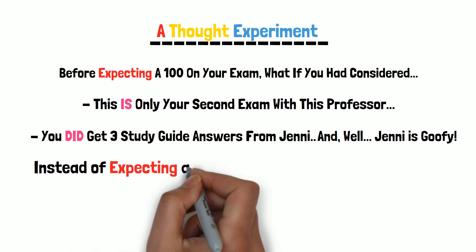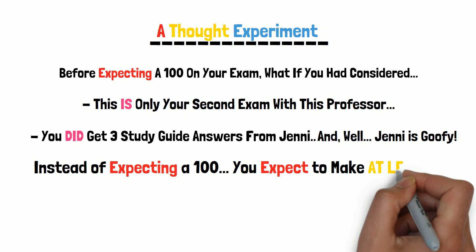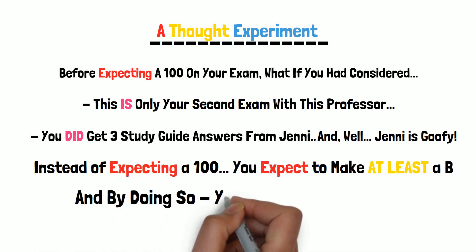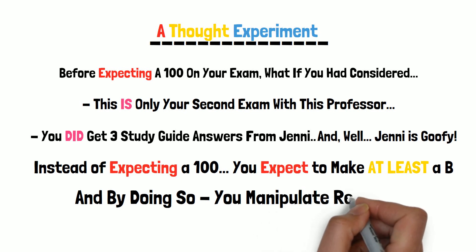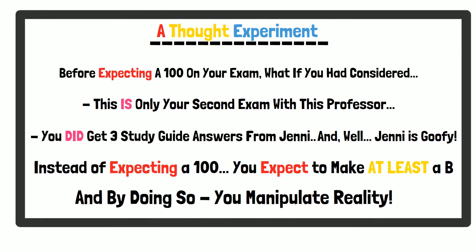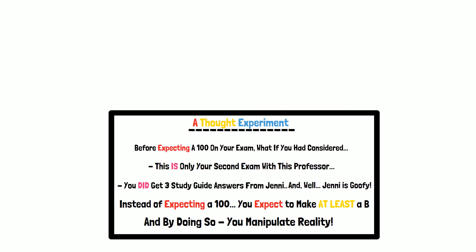Instead of expecting to make above a 95 with all the confidence in the world, you expect to make no worse than a B on the exam. While you still won't be jumping for joy, these expectations radically change your experience of the 82. Now you are as content with a B minus as you would have been with a grade of 95 in the first example we used.